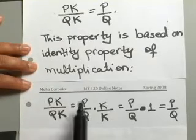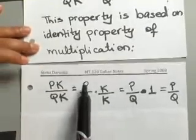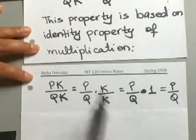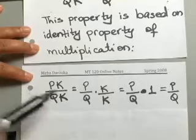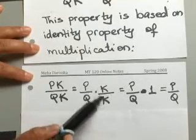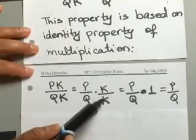If you take that and rewrite it as p over q times k over k, so we're just basically breaking it down into two separate expressions here. Product of two separate expressions.